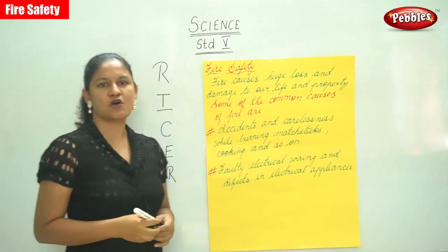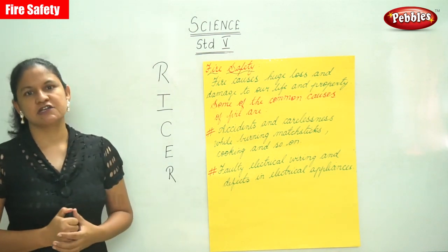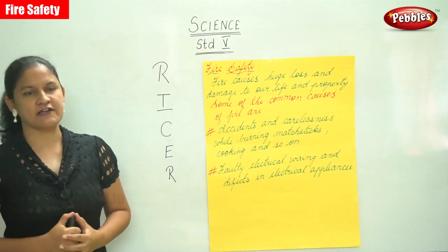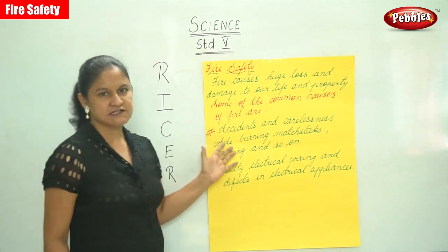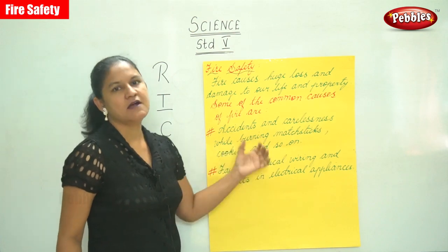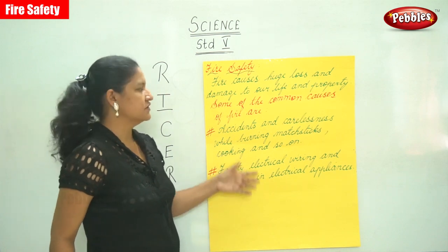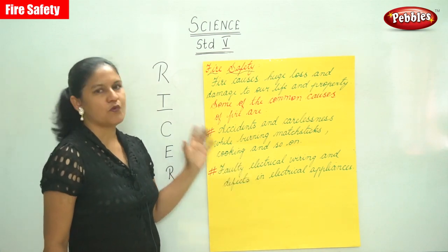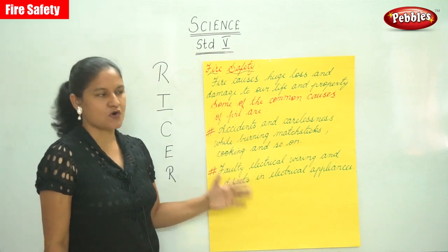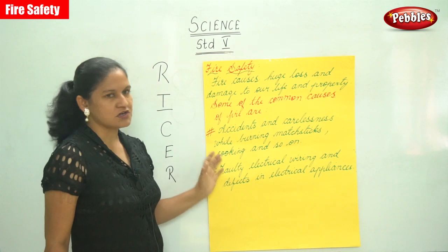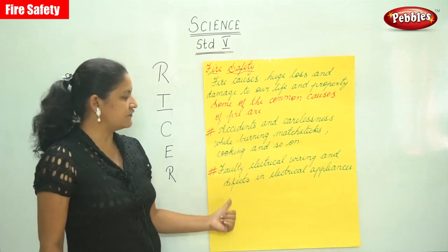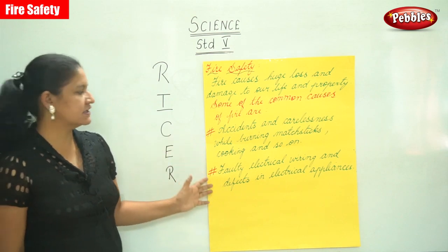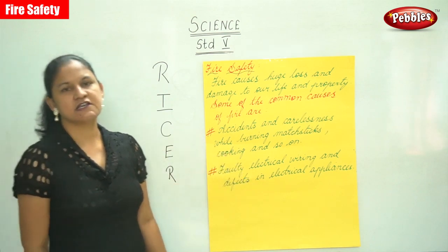Fire causes huge loss and damage to our life and property. The common causes of fire are: first, accidents and carelessness while burning matchsticks, cooking, and so on. The second cause is faulty electrical wiring and defects in electrical appliances.